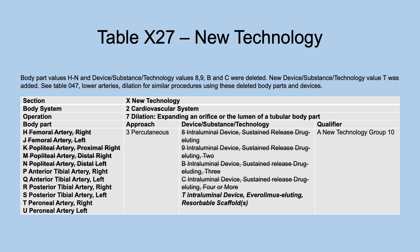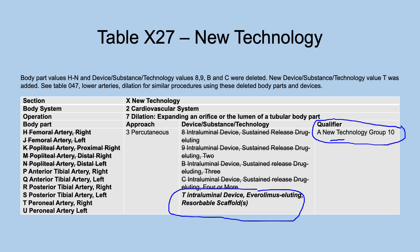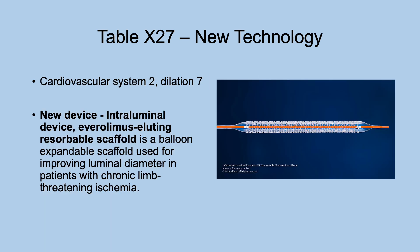Now we're going into new technology. There are a lot of changes to the new technology tables every year. Table X27 dilation got a new qualifier value: intraluminal device, everolimus-eluting resorbable scaffold. The body part value is arteries in the leg. Note that the qualifier value for 2025 is A for new technology group 10. This is a balloon-expandable scaffold used for improving luminal diameter in patients with chronic limb-threatening ischemia.